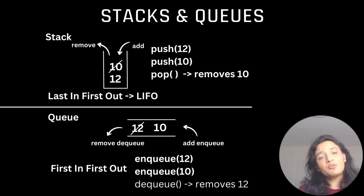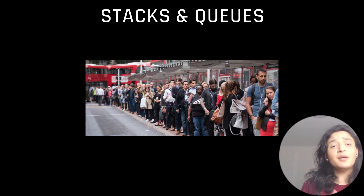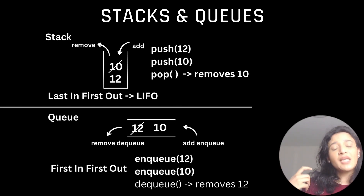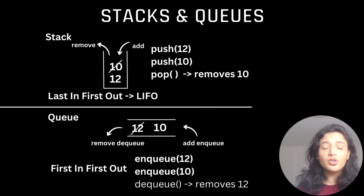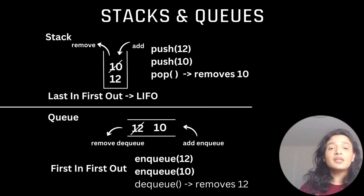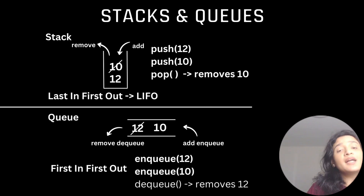Adding data into a stack is called a push operation, and removing data is called a pop operation. The queue data structure is similar to a queue in a bank or bus line — whoever enters first will be served first. This data structure follows a First In First Out (FIFO) policy, where entry happens from one end and removal from the opposite end. Adding data to a queue is called enqueue, and deletion is called dequeue.